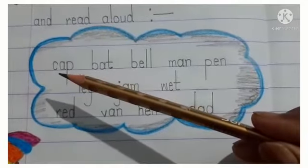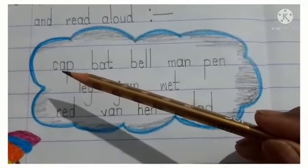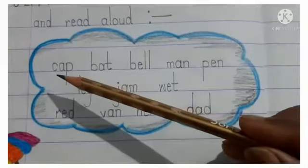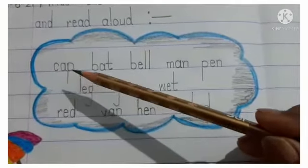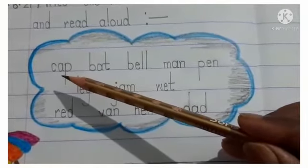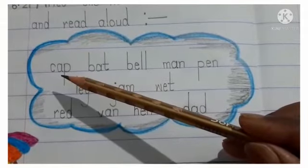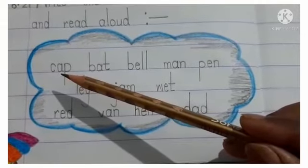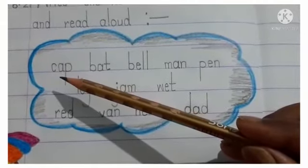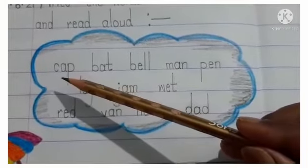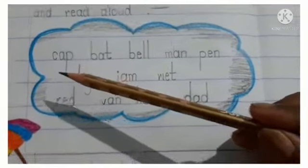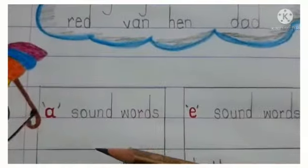Look — here is C-A-P, CAP. When we say CAP, what can we hear? CAP — 'A' can be heard. Here the letter A makes our 'a' sound. It means we have to write CAP in the 'a' sound box.